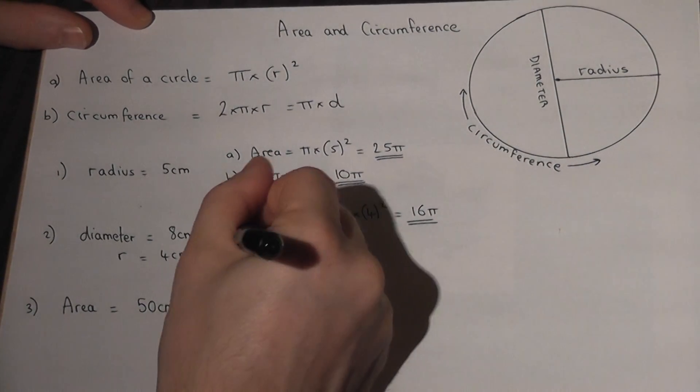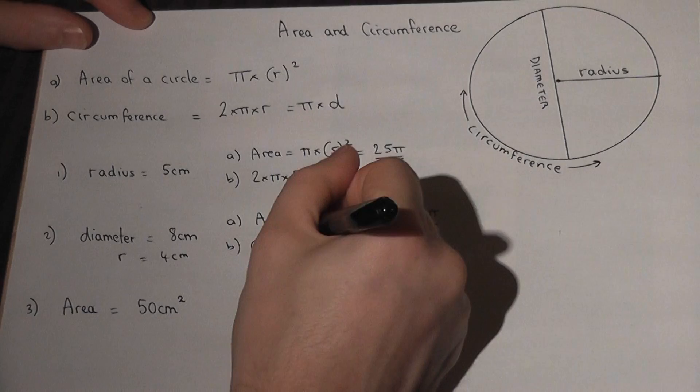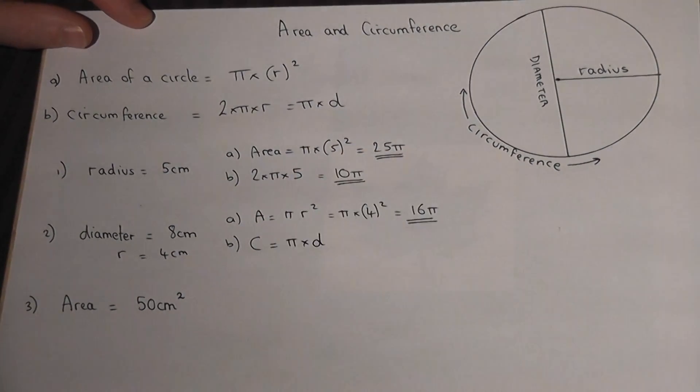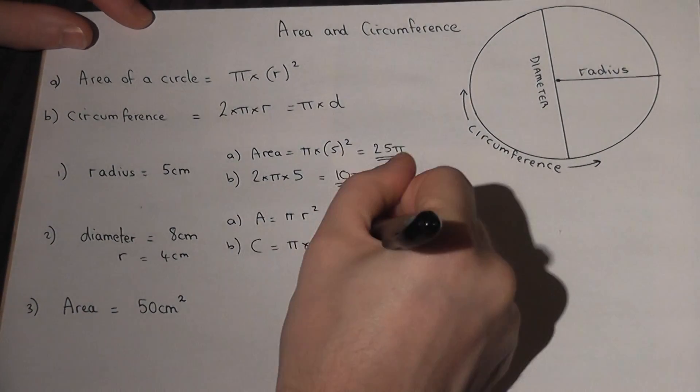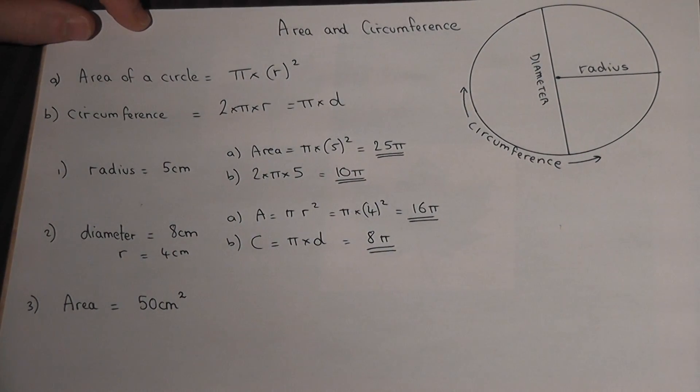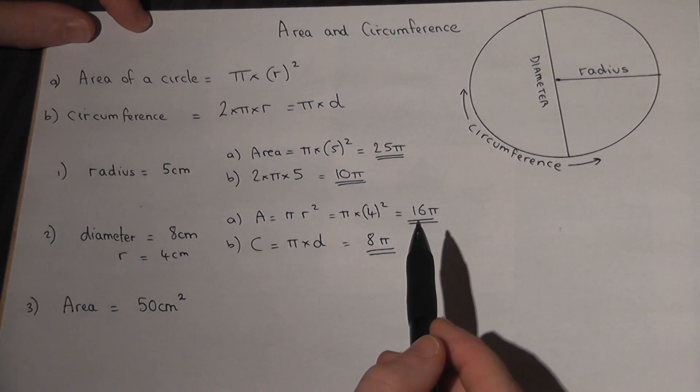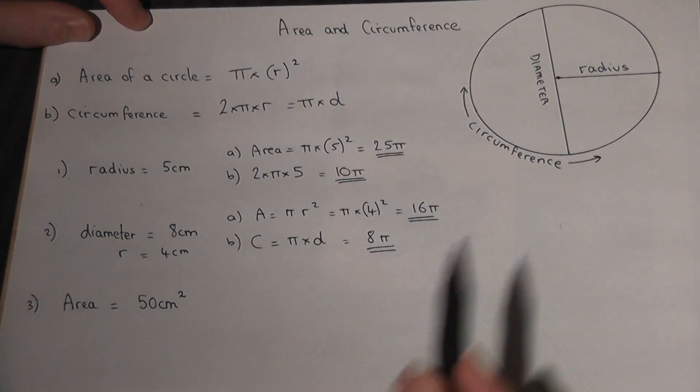And the circumference, that is either 2 times π times r, or π times d. We can choose either of those formulas. We'll do it as π times d, which is π times 8, or 8π. Again, these can be worked out using the π button on the calculator, or indeed 3.14 to two decimal places.